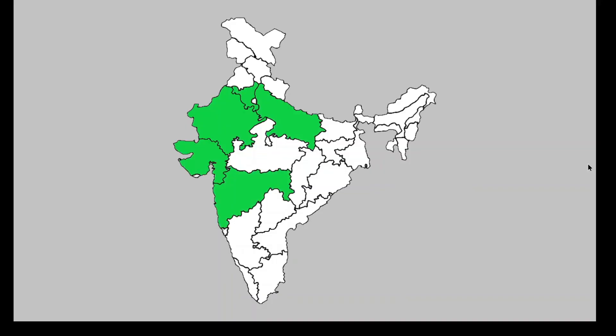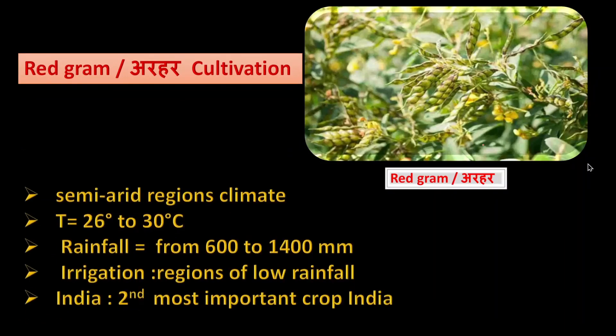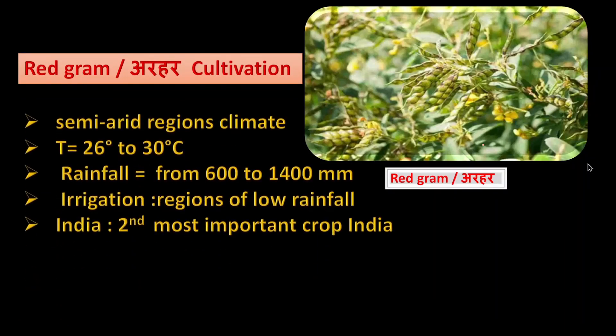Red gram cultivation: Red gram is a protein-rich and staple food in India. Its climate required is semi-arid region. Temperature range is between 26 to 30 degree Celsius. Rainfall required is from 600 to 1400 millimeter. Irrigation is needed in regions of low rainfall.